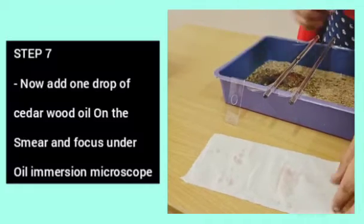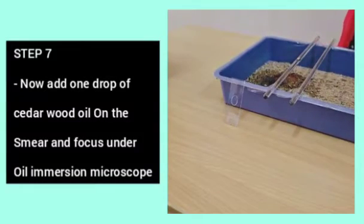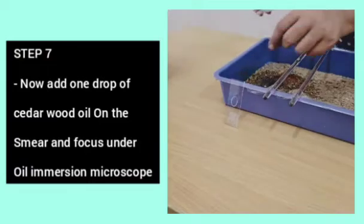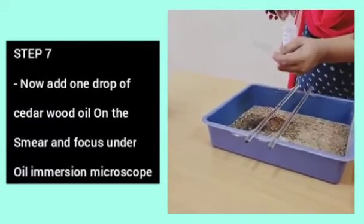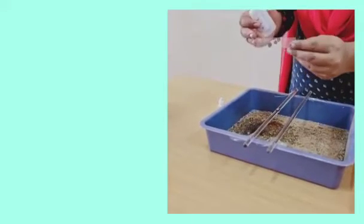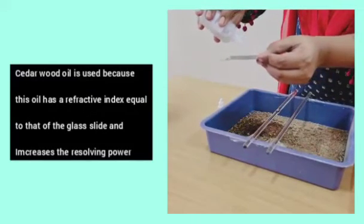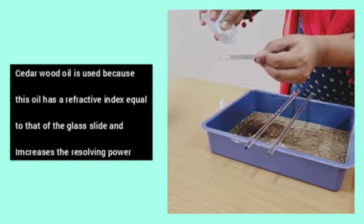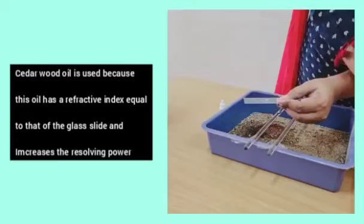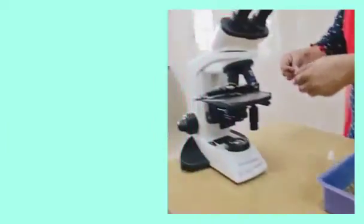Step 7. Now, add 1 drop of cedarwood oil on the smear and focus under the oil microscope. Cedarwood oil is used because the oil has a refractive index equal to that of the glass slide and increases the resolving power.